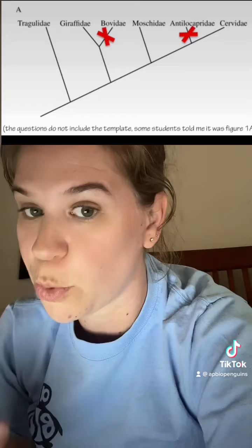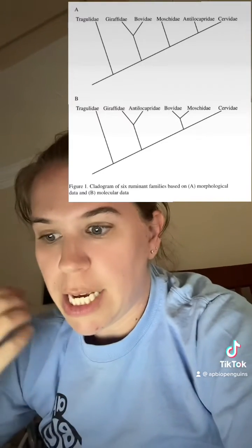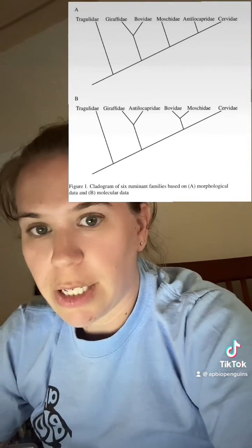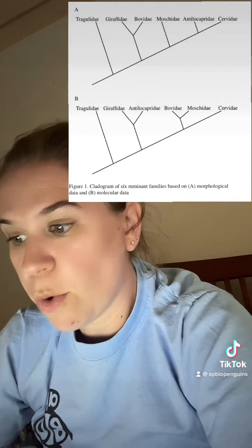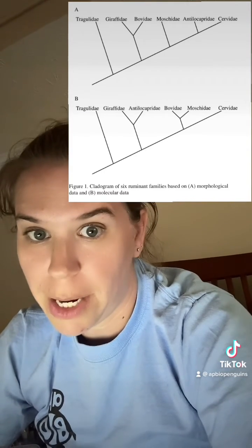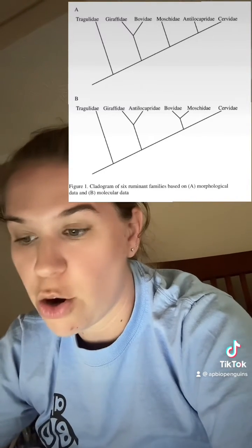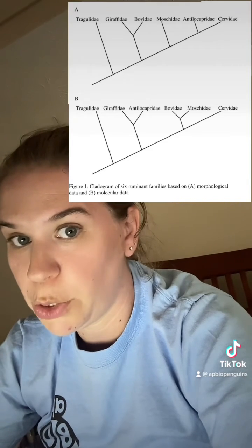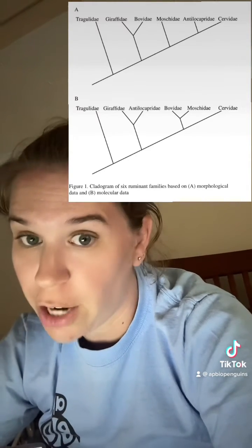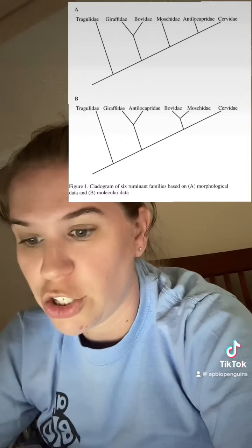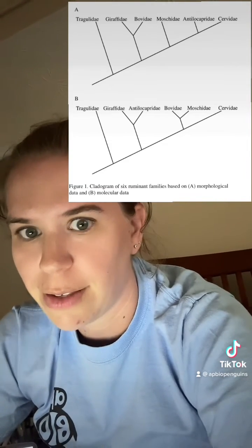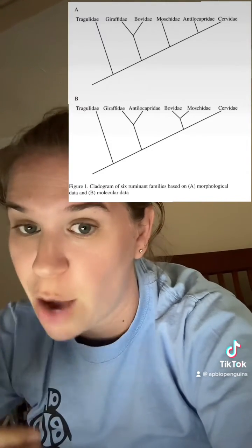Part D is asking to explain why characteristics are found in both C and B are more likely due to convergent evolution than common ancestry. If you look up here, at no point is B and C anywhere close to each other. There's no molecular evidence, there's no morphological evidence. It just seems that they have a similar characteristic. It's only found in those two.